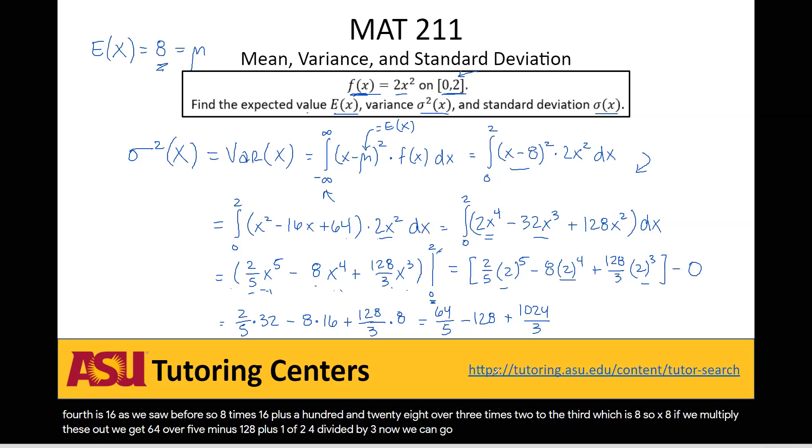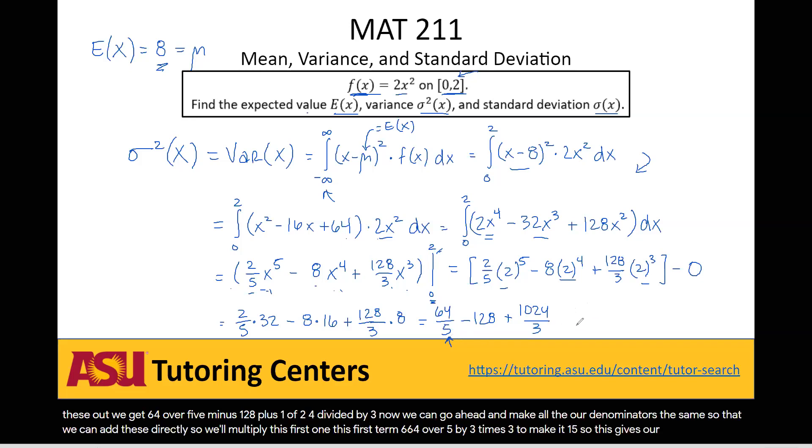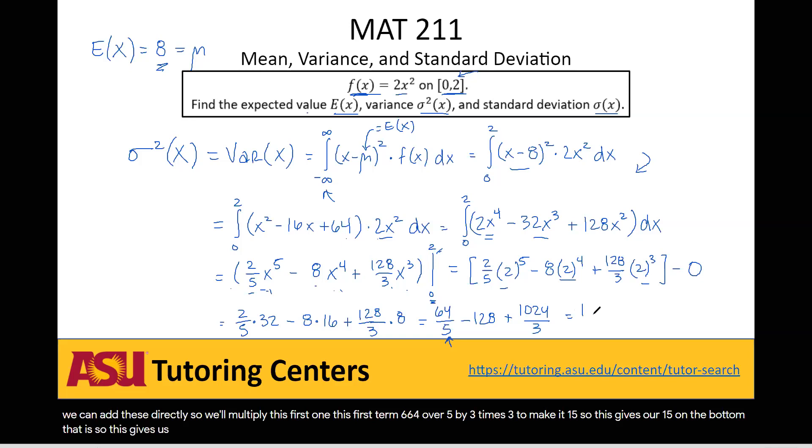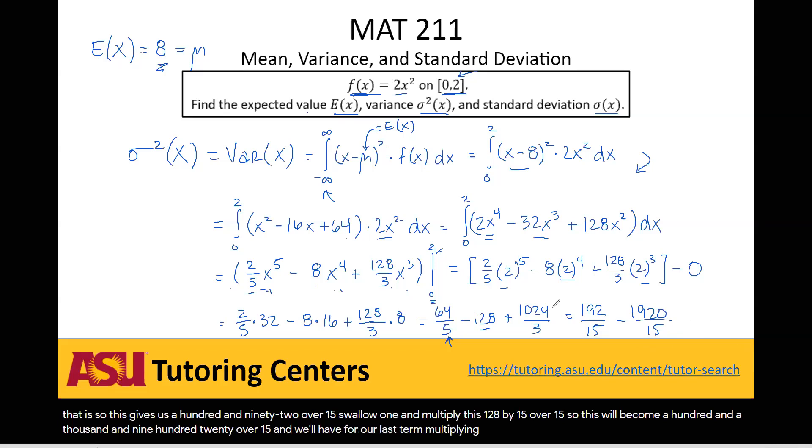Now we can go ahead and make all our denominators the same so that we can add these directly. So we'll multiply this first term, 64 over 5, by 3 times 3 to make it 15. So this gives us 192 over 15 minus, well, we'll want to multiply this 128 by 15 over 15. So this will become 1,920 over 15. And we'll have, for our last term, multiplying both the top and the bottom by 5, we'll get plus 5,120 over 15.